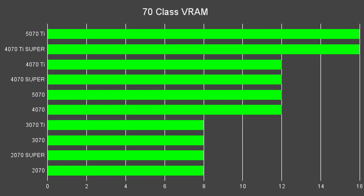With the 5070 Ti having 16GB of VRAM, the 4GB bump up from the 12GB of the 4070, 4070 Super, and 4070 Ti is a welcome benefit. However, the 4070 Ti Super has the same 16GB of VRAM as the 5070 Ti. More VRAM will only impact your workflow if you need it — if you don't, it's not going to have any impact on your Blender usage.